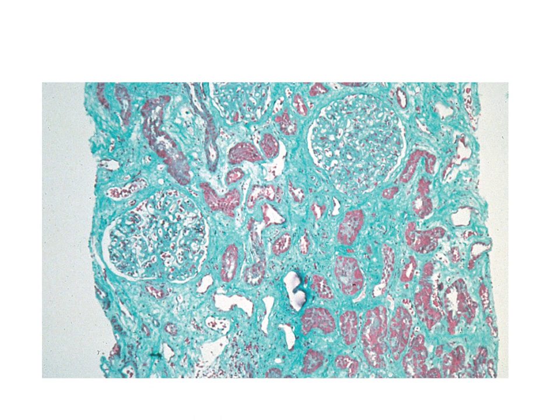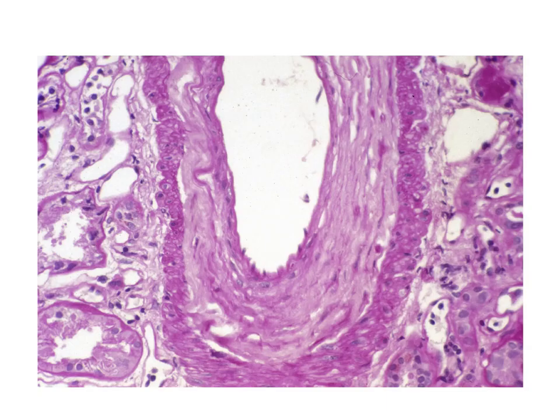This is a typical Masson's trichrome stain showing extensive fibrosis in green with lots of space between the tubules. Remember this could be any scarred kidney and is not exclusive to transplantation. This is the typical arteriopathy we see in chronic allograft dysfunction with IFTA — notice lots of duplication in the sub-intimal layer, but very little in the way of cellular infiltrate.